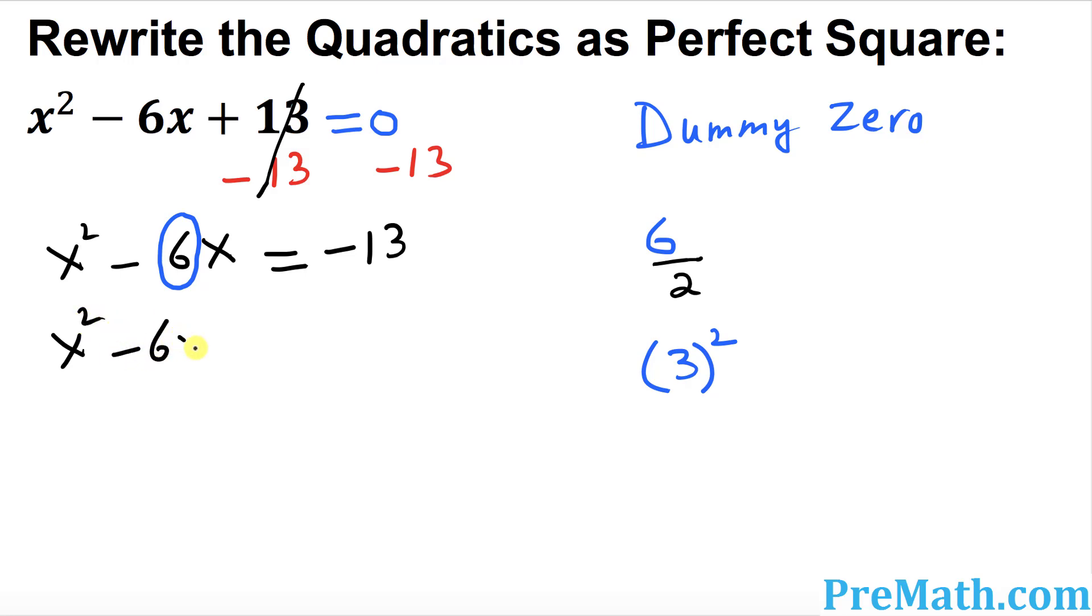x squared minus 6x plus, and then I'm going to put down negative 13 plus, and now I will be putting down this 3 squared on both sides. Now look at this thing on the left hand side. x squared minus 6x plus 3 squared is a complete square of what? This is x and this is minus sign and over here, 3.